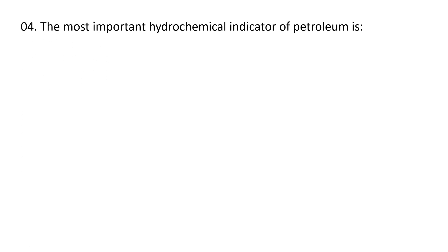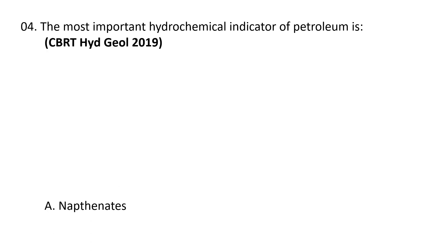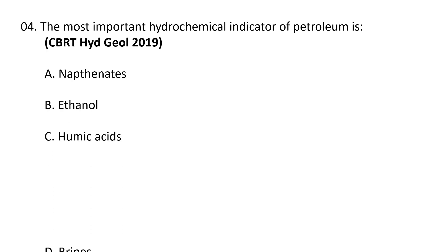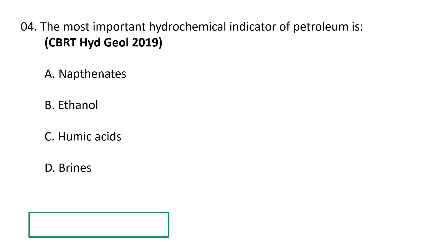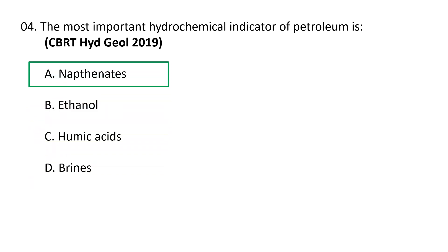Next question. The most important hydrochemical indicator of Petroleum is: A. Naphthenates, B. Ethanol, C. Humic Acids, D. Brines. The correct answer is A — Naphthenates.